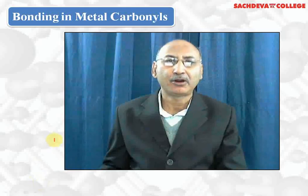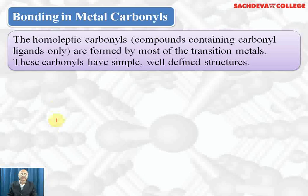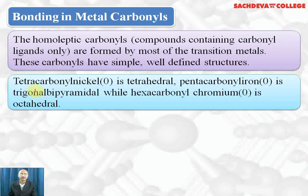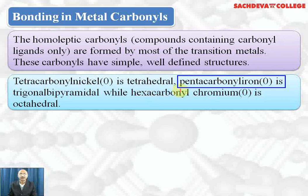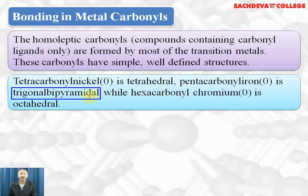Let's take up bonding in metal carbonyls. Homoleptic carbonyls — compounds containing carbonyl ligands only — are formed by most of the transition metals. These carbonyls have simple, well-defined structures, and in most carbonyls the oxidation state of the transition metal is zero. For example, tetracarbonyl nickel(0) is a tetrahedral complex, and pentacarbonyl iron(0) is trigonal bipyramidal.